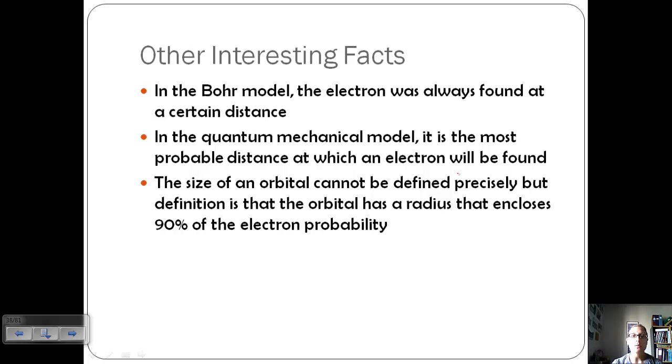But the definition is that the orbital has a radius that encloses 90% of the electron probability. So basically, we take all those dots and we say we're going to turn it into a circle shape or whatever shape those electrons are occupying, and say 90% of the time the electron is going to be within this shape. We're not defining it precisely. We're saying 90% of the time it's going to be in this area somewhere.